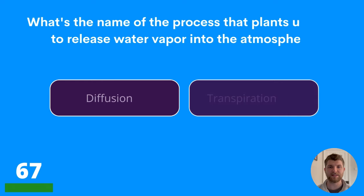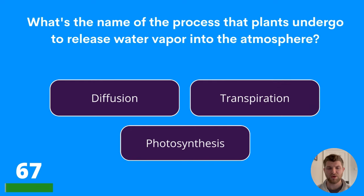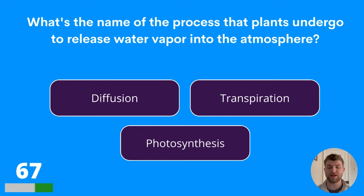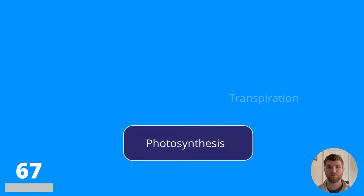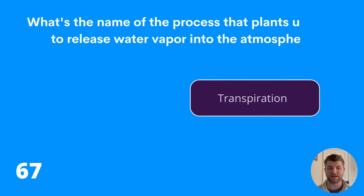Question sixty-seven: what's the name of the process that plants undergo to release water vapour into the atmosphere? Diffusion, transpiration, or photosynthesis? The answer is transpiration.